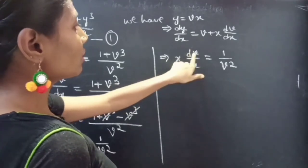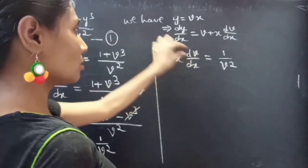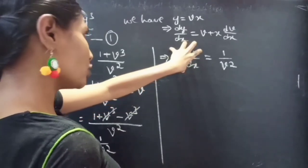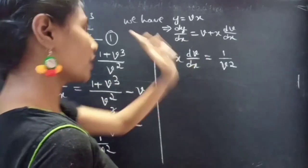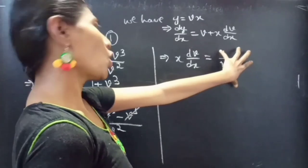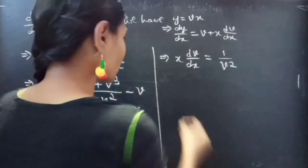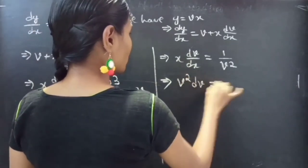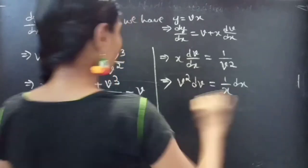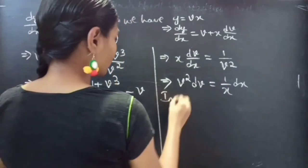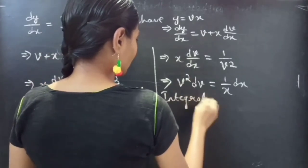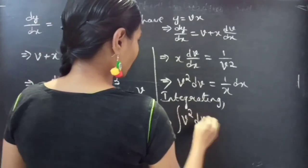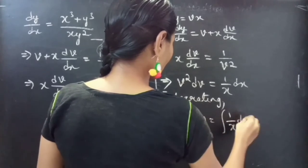We can write this in variable separable form. Since dv is in the numerator, we take all v terms to the LHS, and since dx is in the denominator, we take all x terms to the RHS. This gives v² dv = (1/x) dx. The variables are now separable. Integrating on both sides: ∫v² dv = ∫(1/x) dx.